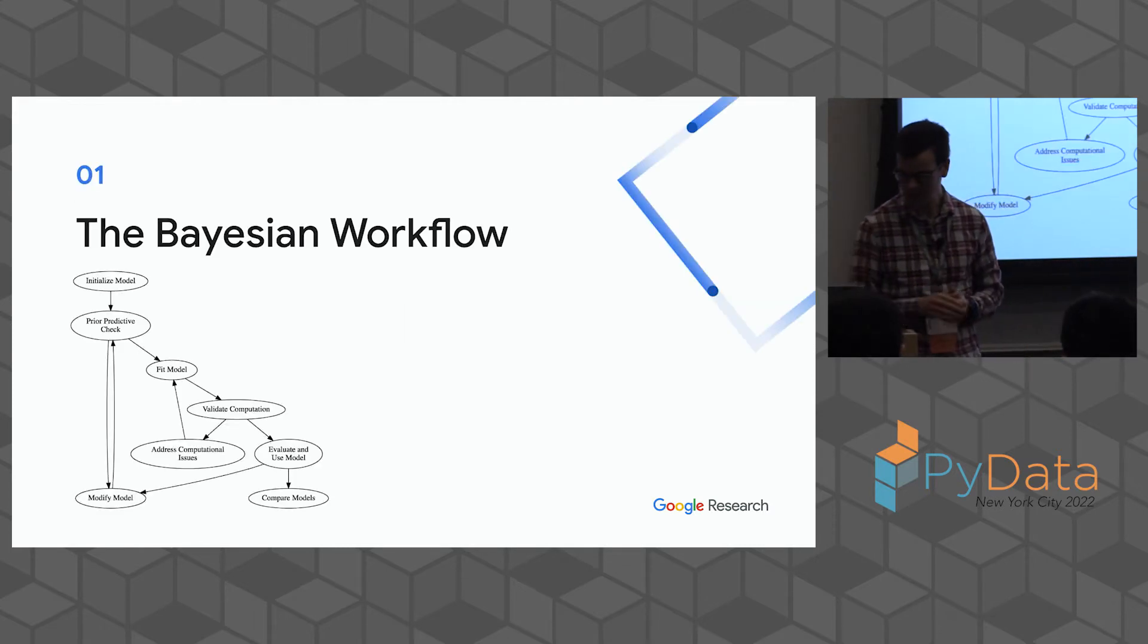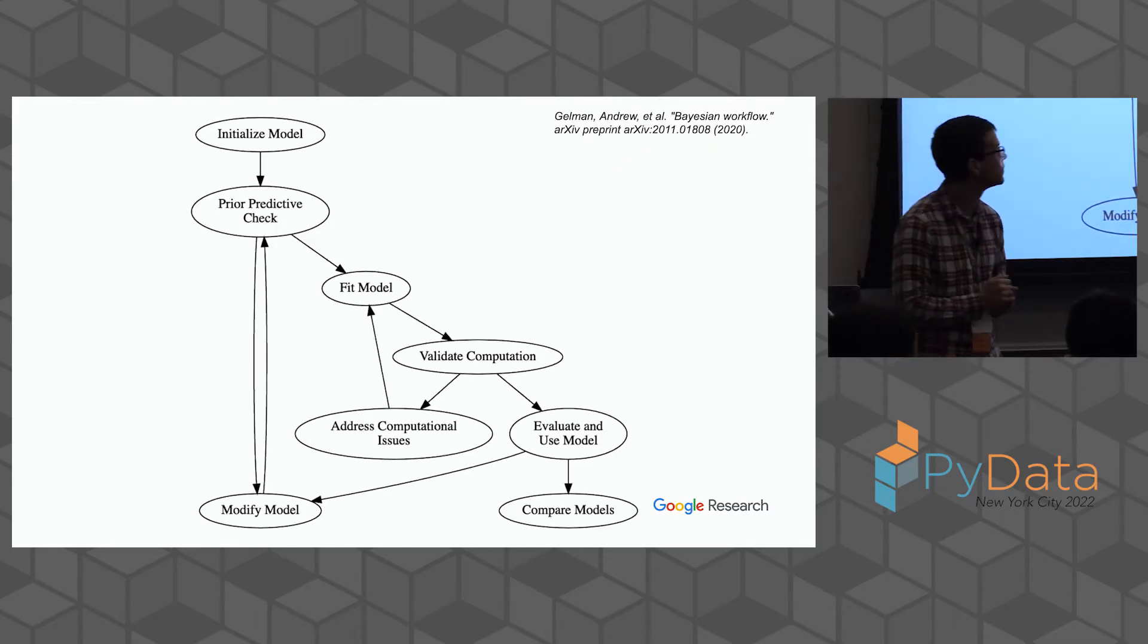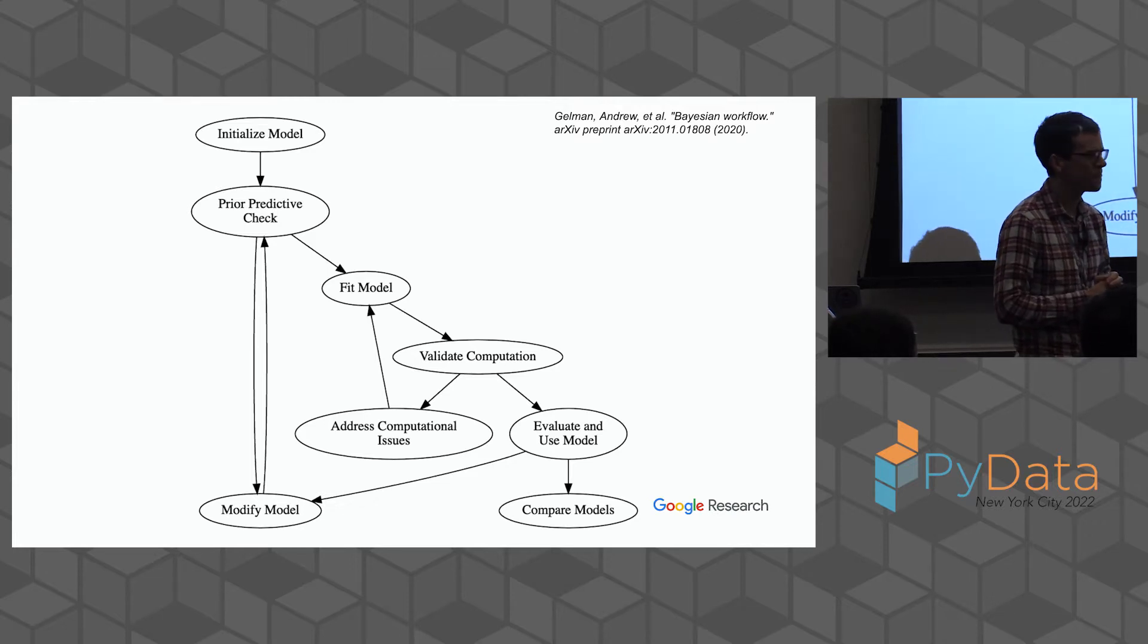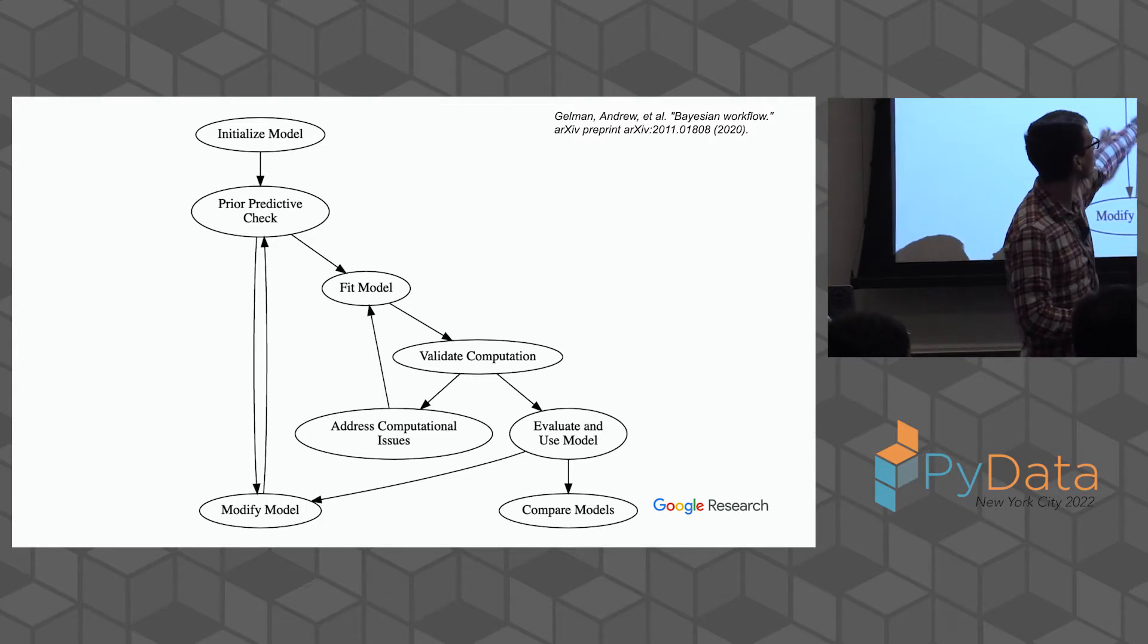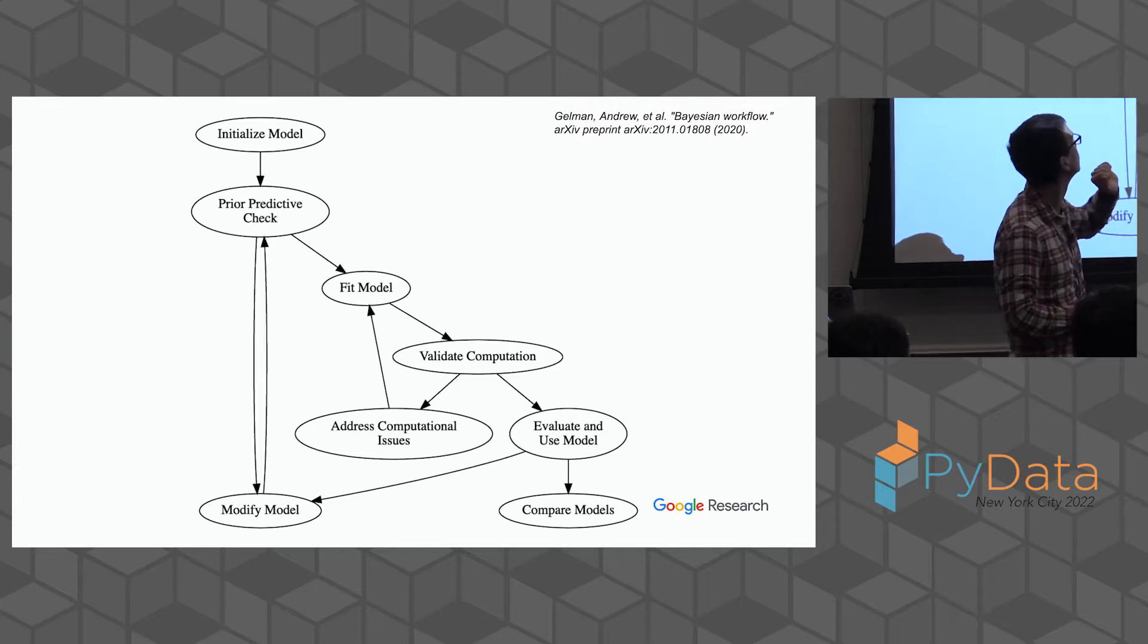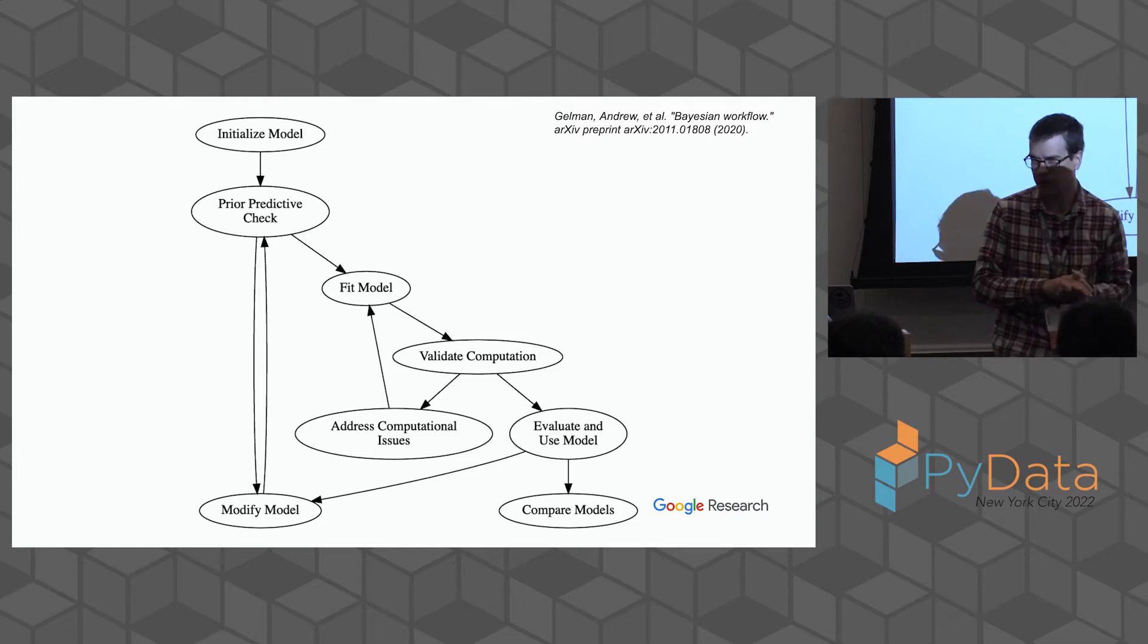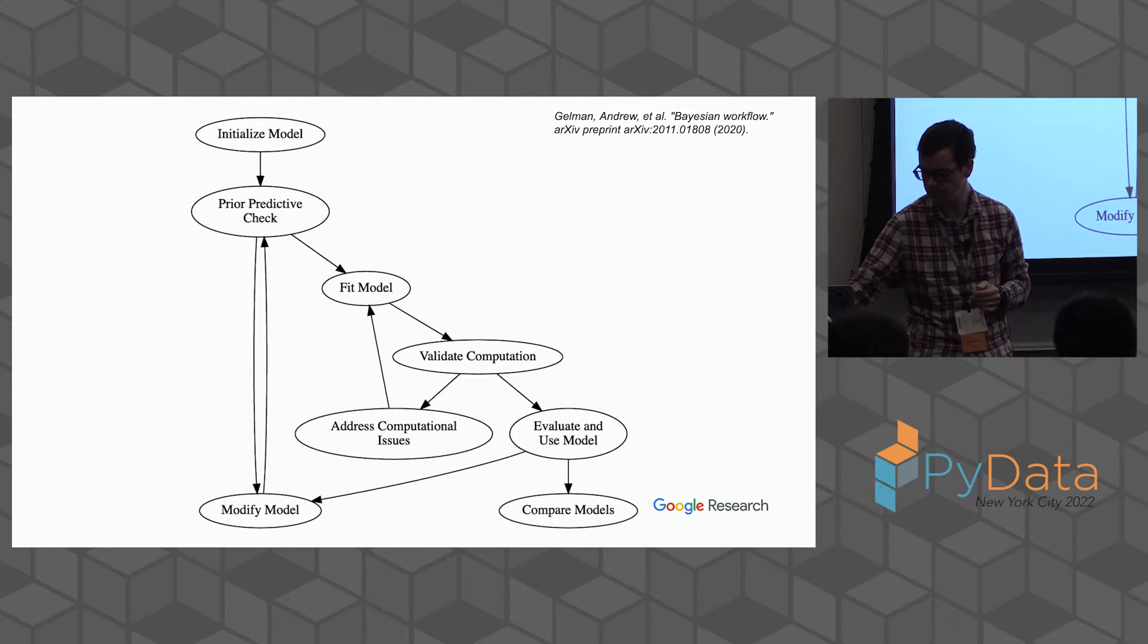So first of all, this is the Bayesian workflow from this Gelman et al. paper. I encourage you to go look for the paper, you can just Google Bayesian workflow Gelman. So I recreated the workflow that they have up here. These are a lot of steps, there's a lot of places to go. I thought a good way is just to work through a case study.